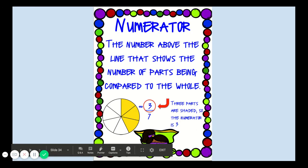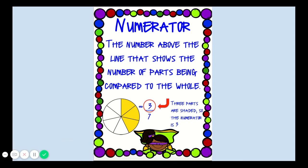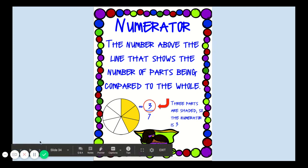Let's talk a little bit more about the numerator. The numerator is the number above the line that shows the number of parts being compared to the whole. In this example, three parts are shaded, so the numerator is three.